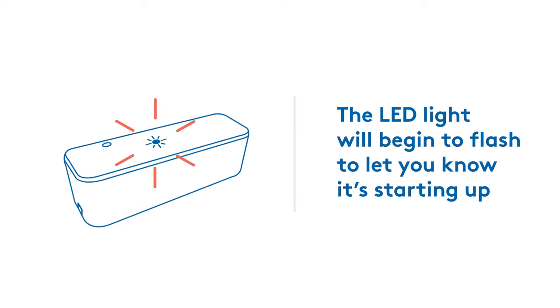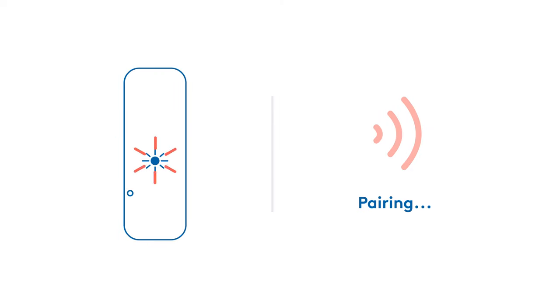The LED light will begin to flash to let you know it's starting up. The light will continue to blink while it attempts to pair with your smart home hub.